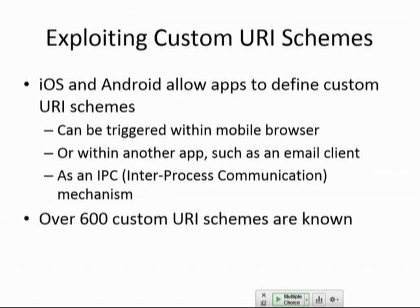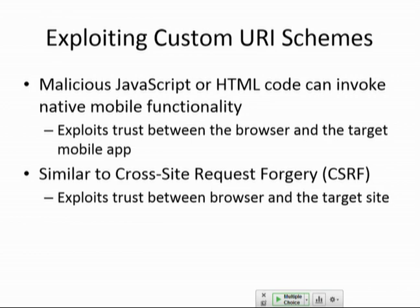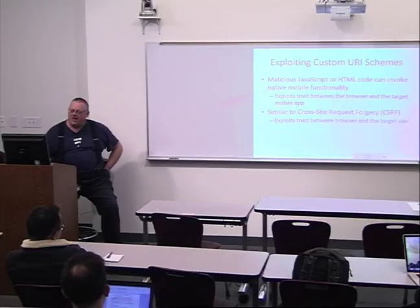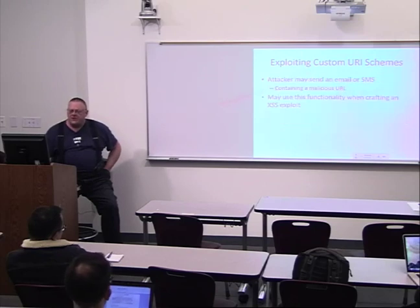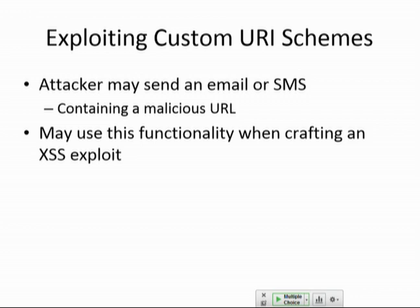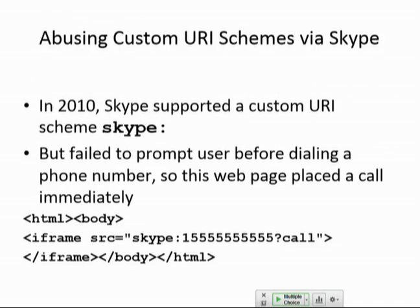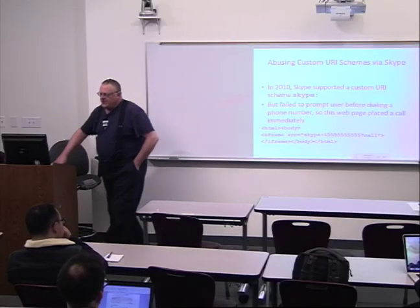You can define custom URI schemes — this is one way to allow signals to move around on the device as an inter-process communication method. There are 600 of them. If you can make an app or web page that invokes these, similar to cross-site request forgery, your web page can launch the services of an app that uses a custom URI scheme, and the app developer might not have thought of that. You can send a malicious URL via email or SMS, get someone to click on it — the URL is not HTTP or HTTPS but something else — or use cross-site scripting. One famous example was Skype in 2010: 'skype:phonenumber' would immediately call as soon as you executed the Skype URL, because it was not the native telephone system and didn't have OS protection. You could make a malicious page that tricked people into making a Skype call.